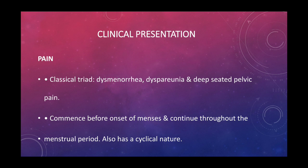Clinical presentation includes pain, which is classical. There is a classical triad of dysmenorrhoea, dyspareunia, and deep-seated pelvic pain. Pain commences before onset, advances, and continues throughout the menstrual period, also having a cyclical nature.